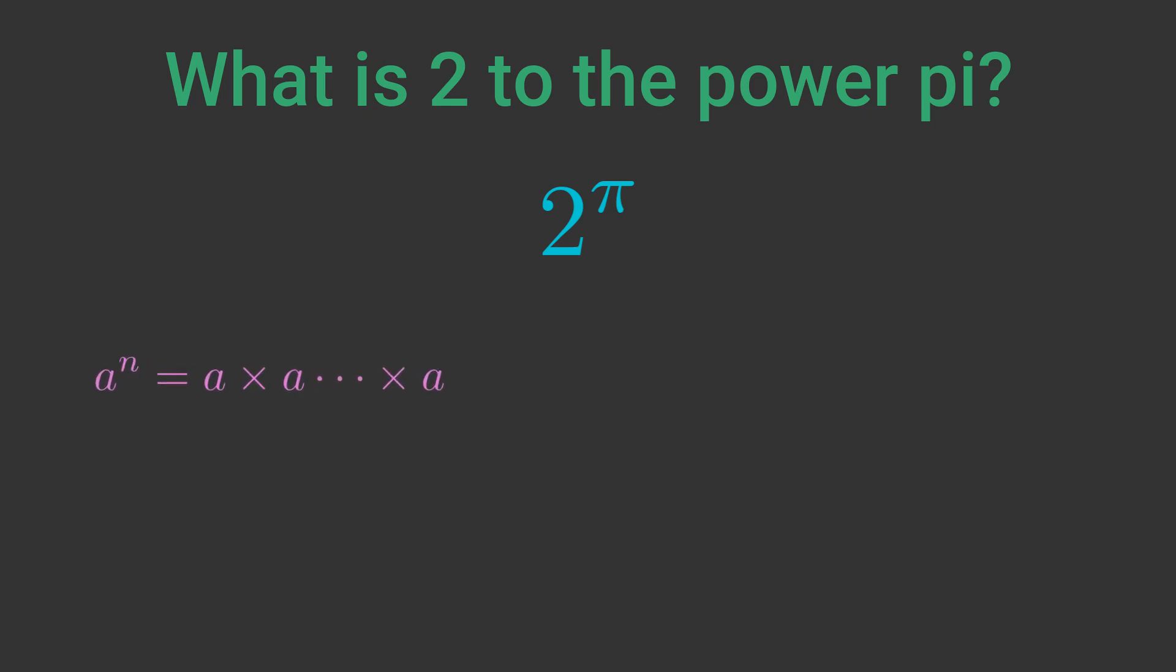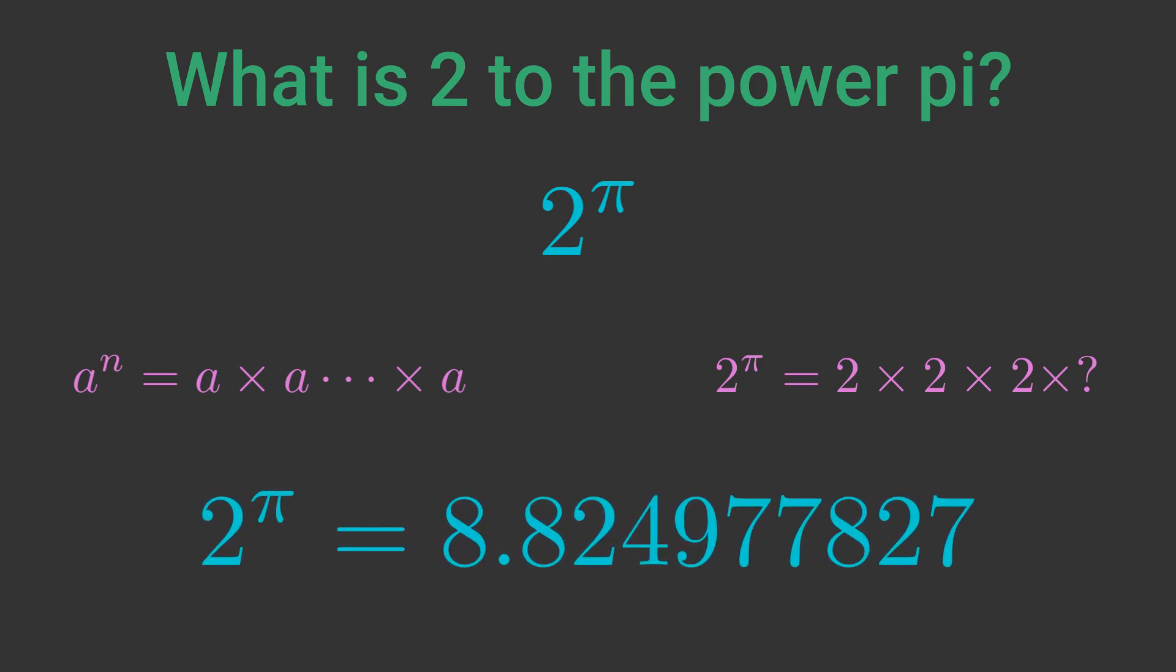The normal definition of a to the power n, when n is a positive integer, is a multiplied by itself n times. But how can we multiply 2 by itself π times? If you try this in a calculator you will get something like 8.824. How does it get that answer?